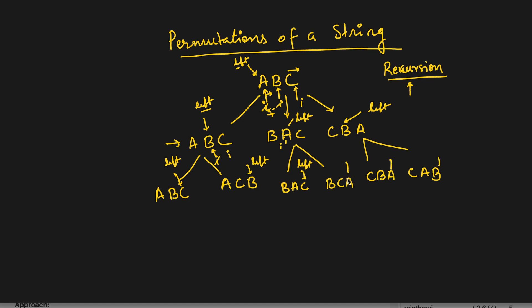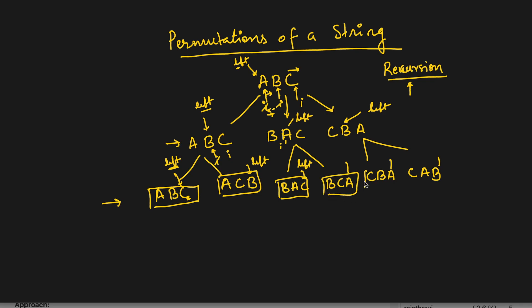Once left reaches to the last index, we stop and print the string. All the permutations are: abc, acb, bac, bcb, cba, and cab.